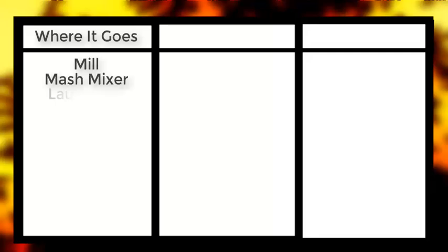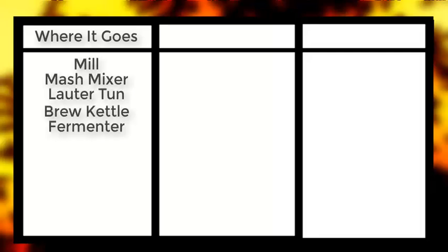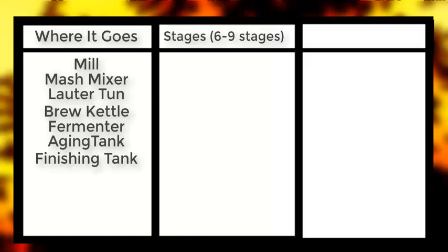On screen I'm going to have three different columns covering the seven different points and parts it goes through before you get the end product of beer. With the help of enzymes, there are roughly nine stages depending on how you do it. Some companies do less, some companies do more, but the main way is with these nine.